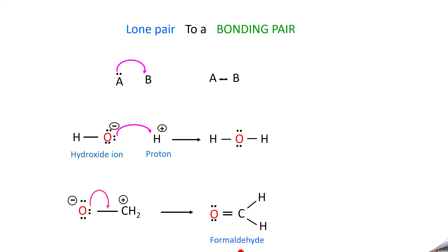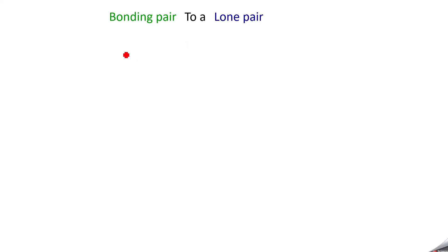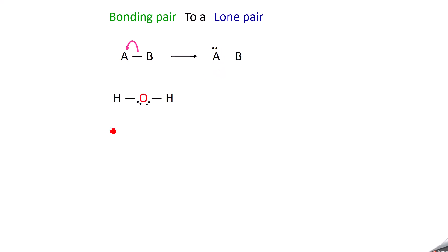Next: bonding pair becomes a lone pair. Take atoms A and B — a bond pair is between them. Now this bond is shifted to A, so you get A and B separated, and the bond which shifted to A becomes a lone pair on A. So the bonding pair between A and B becomes a lone pair on A.